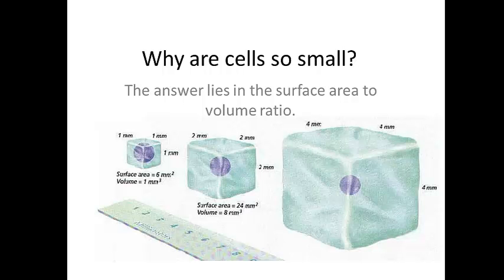This might seem like a silly question, but why are cells so small? This diagram helps us understand that the answer lies in the surface area to volume ratio. If we look at a cube that's 1 mm by 1 mm by 1 mm — cells aren't cubes, but it gets the point across — the surface area would be 1 by 1, that's 1 square millimeter, times 6 sides, so surface area is 6 square millimeters. The volume is 1 millimeter cubed. So the surface area to volume ratio is 6 to 1, or just 6.